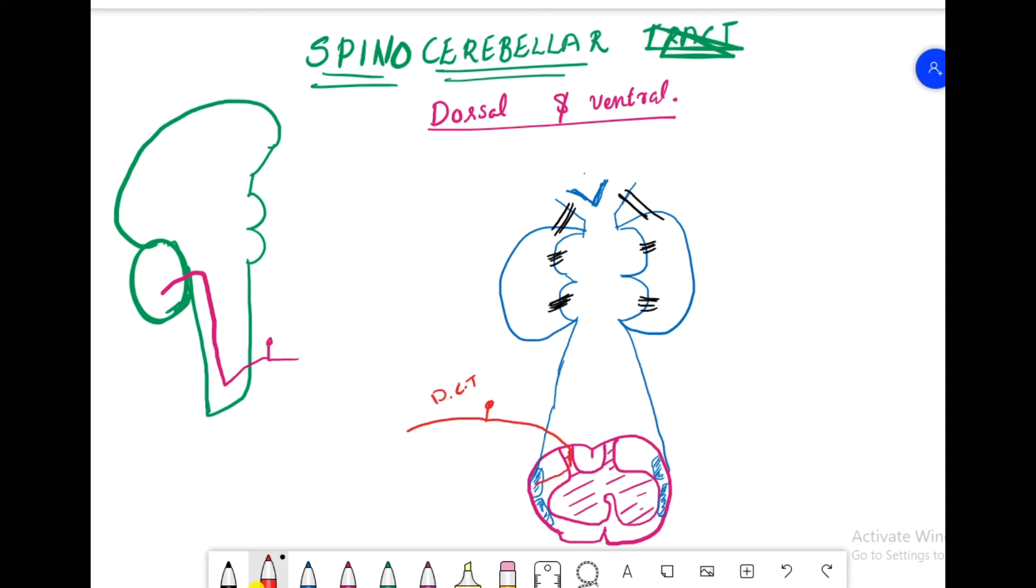For dorsal cerebellar tract, they come into medulla then get into cerebellum, this is ipsilateral. Ventral cerebellar tract decussates within the spinal cord and goes to the midbrain, and when it reaches the cerebellum they move to opposite side.